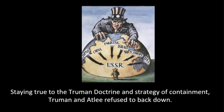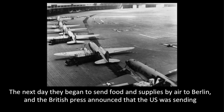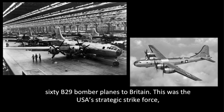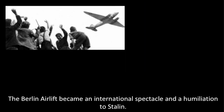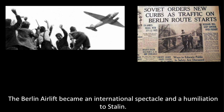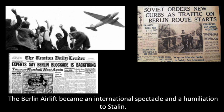Staying true to the Truman Doctrine and strategy of containment, Truman and Attlee refused to back down. The next day they began to send food and supplies by air to Berlin. The British press announced that the US was sending 60 B-29 bomber planes to Britain — the USA's strategic strike force — and it was left deliberately unclear as to whether these planes were capable of dropping nuclear bombs. The Berlin Airlift became an international spectacle and a humiliation for Stalin.